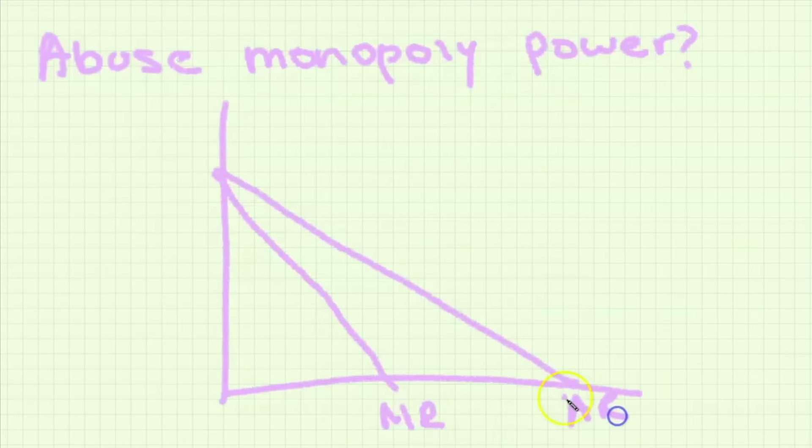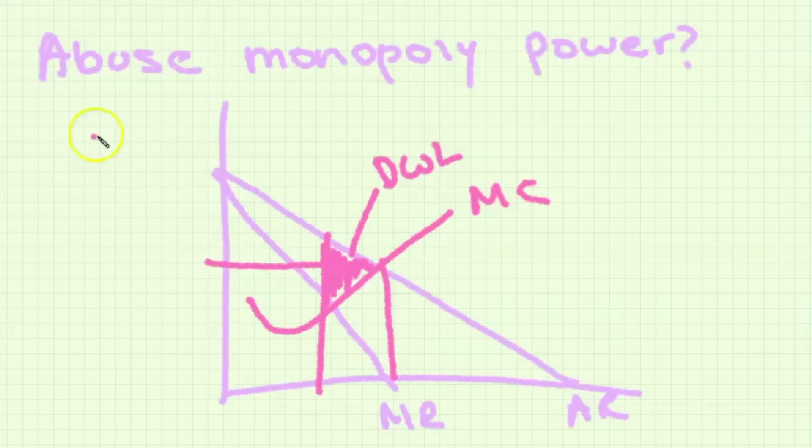Monopoly power or price setting ability is also a type of market failure because monopolies or oligopolies both have the ability to set price and so they set the price too high and they underproduce in order to make profits and this also leads to a deadweight loss.